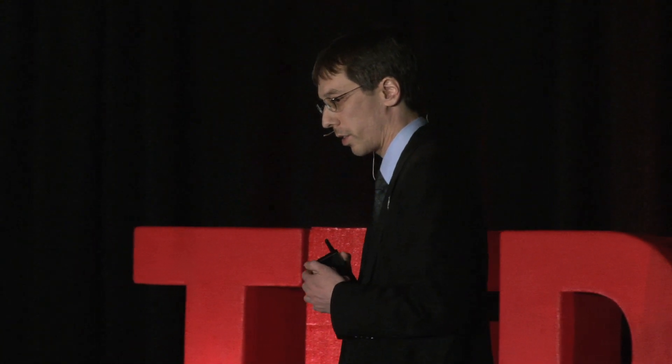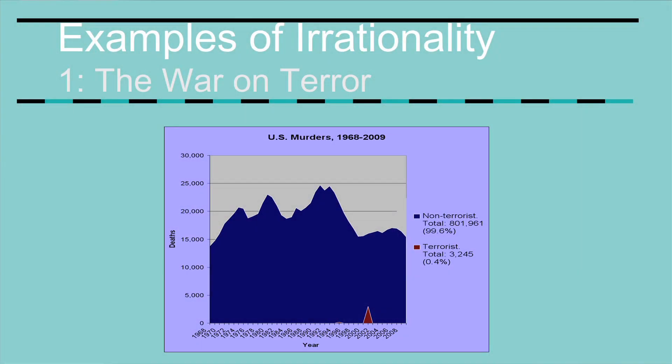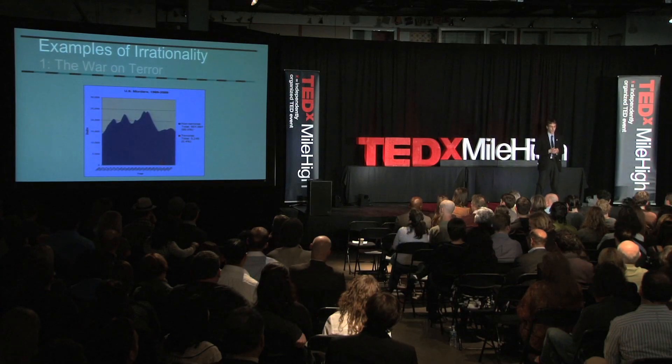It's interesting to compare this to other problems. On this graph, the red represents terrorist murders and the blue represents people murdered by non-terrorists in the United States over the same 50-year period. The terrorists killed about 0.4% of the total. The non-terrorists killed 802,000 people, or 99.6% of the total.